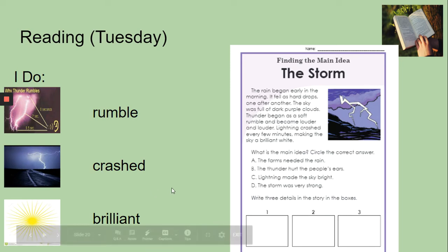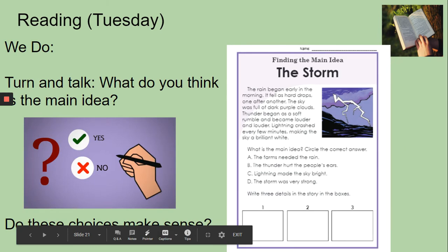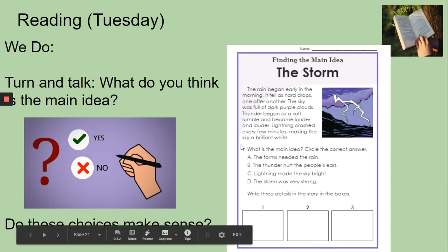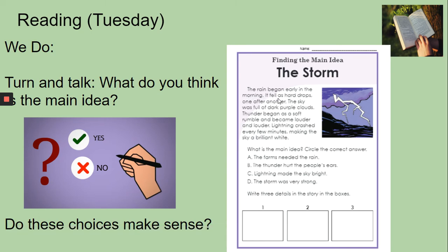So we are going to read the story. I'm going to read it, so listen to me as I read the story. Don't worry about those questions yet — I want you to listen and follow along with me. The rain began early in the morning. It fell as hard drops one after another. The sky was full of dark purple clouds. Thunder began as a soft rumble and became louder and louder. Lightning crashed every few minutes, making the sky a brilliant white.